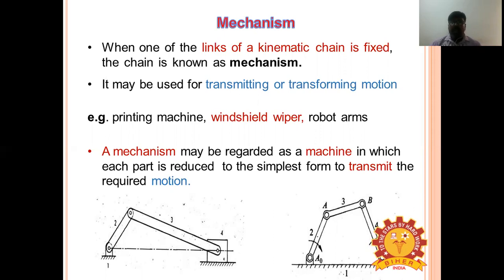The difference between a mechanism and a machine: a mechanism transmits and modifies motion, while a machine transmits force and does mechanical work. A mechanism is a skeleton outline of a machine to produce definite motion between various links. A machine may have many mechanisms for transmitting power. Examples of mechanisms: clock, typewriter. Examples of machines: shaper, planer.